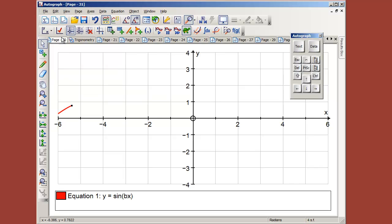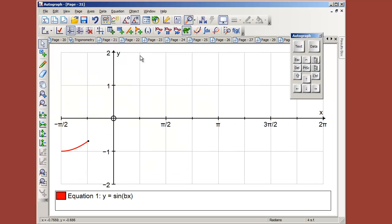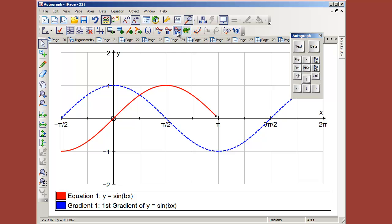Now bx is just going to take the initial value of b of 1, so it's just going to be y equals sine x. And if we do the gradient function of that, you will find that you get that.